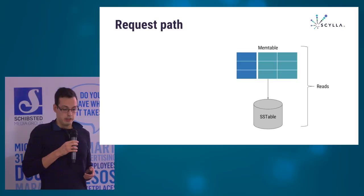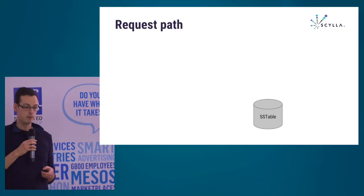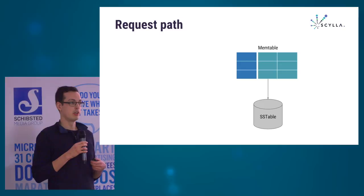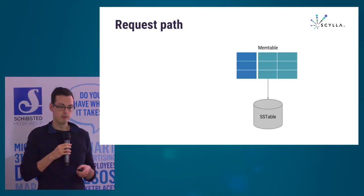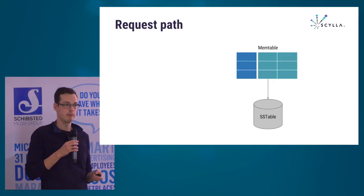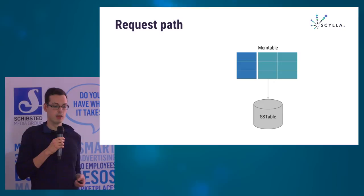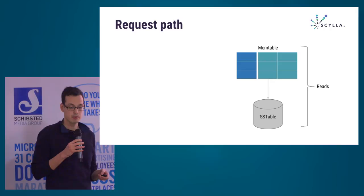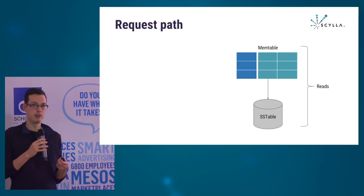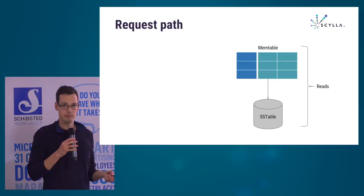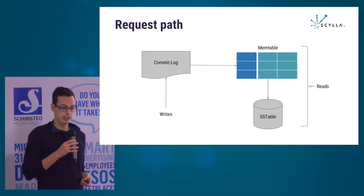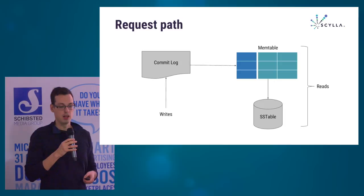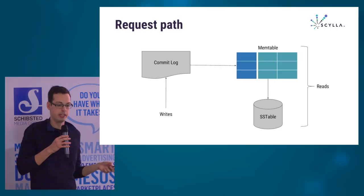What originates an SSTable is a memtable, which is just an accumulation of writes in memory. In Cassandra, you have to configure the maximum size of the memtables before they are flushed to disk. In Scylla, it's usually a percentage of memory and we tune it on the fly. When you have a read, you have to take into account not only SSTables but memtables as well. However, if a node goes down before flushing a memtable to disk, you might lose data. So to complete the picture, you add the commit log — a file stored on disk to which you append incoming writes, and you discard it when a memtable is flushed to disk.